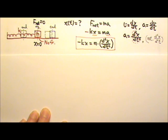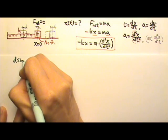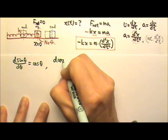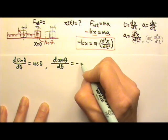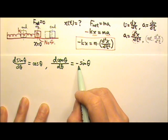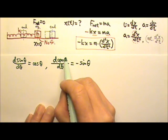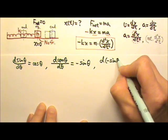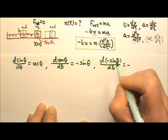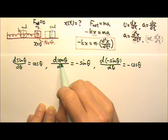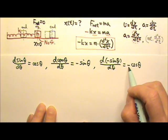The solution is sine or cosine. When we take the derivative of sine θ, we get cosine θ. When we take the derivative of cosine θ, we get negative sine θ. So starting with sine, after two derivatives we get the negative of the original function. Starting with cosine: the first derivative gives negative sine, and the second derivative gives negative cosine — again the negative of the original function.